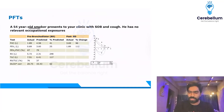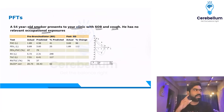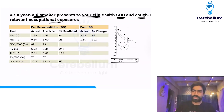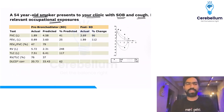A 54-year-old smoker presents to your clinic with shortness of breath and cough. He has no relevant occupational exposure, but he is a smoker. So the first thing to evaluate is the PFT stepwise.